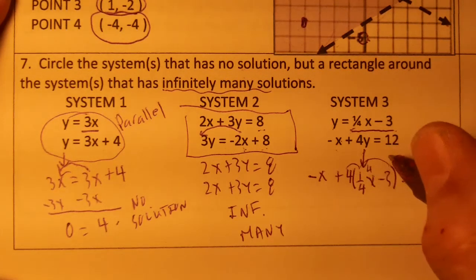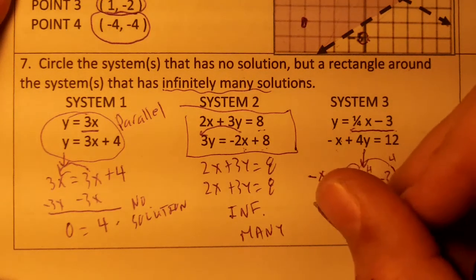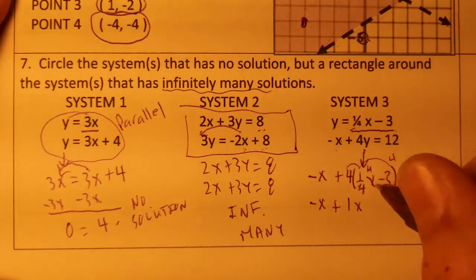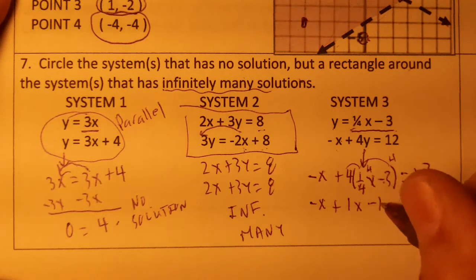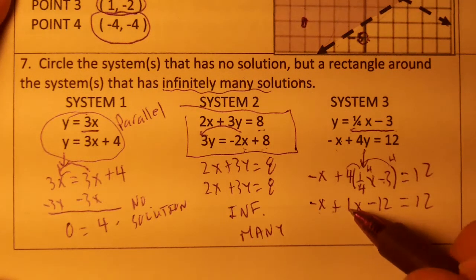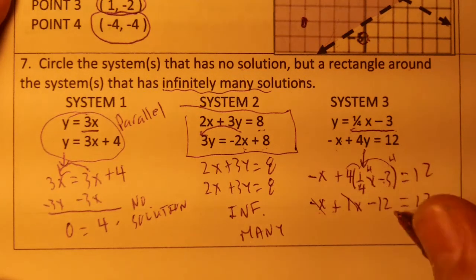Distribute the 4. Okay, so I'm going to drop the negative x plus 4 times 1/4 is just 1x. 4 times negative 3 is negative 12 equals 12. Negative x plus 1x is 0. So I'm going to end up with negative 12 equals 12.